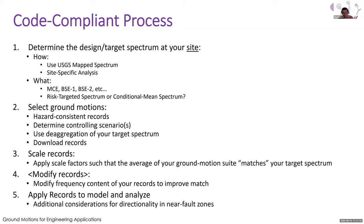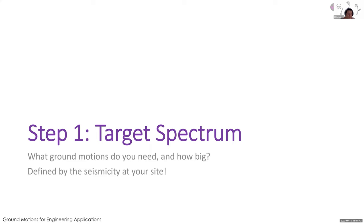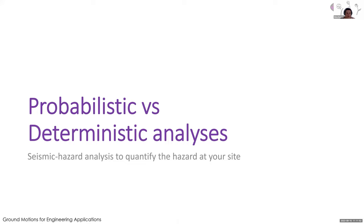I'm going to spend a little more time on certain things I've noticed people have a more confused understanding of, especially structural engineers. I really want to show that it's not that difficult — you just need to sit down and visualize it. The first step is the target spectrum: what ground motions do you need and how big are they? That's defined by the seismicity at your site. You have to do two types of analyses: a probabilistic analysis and a deterministic analysis.